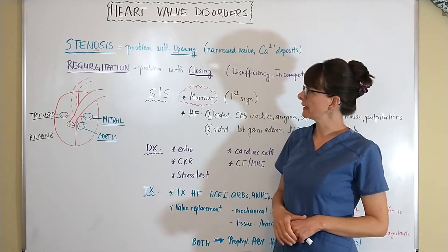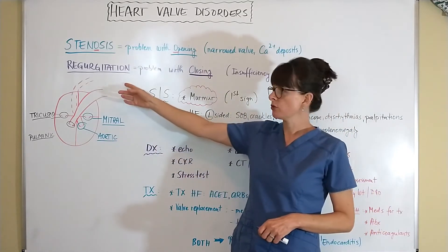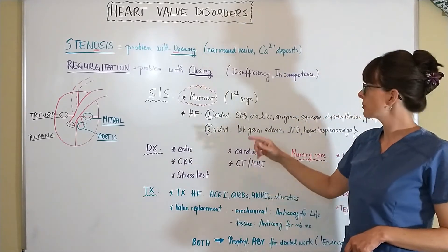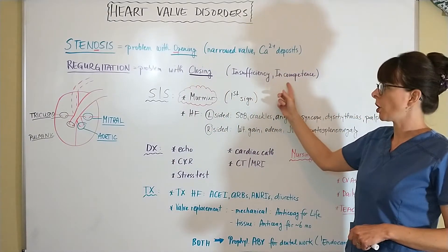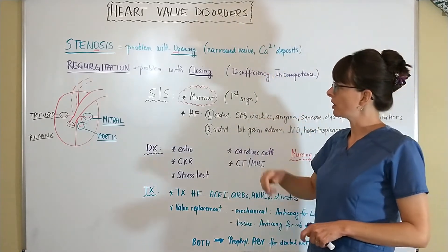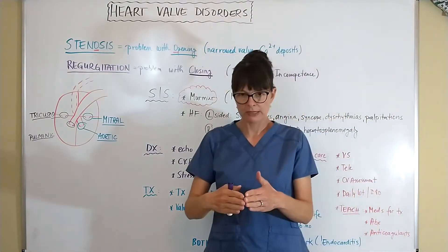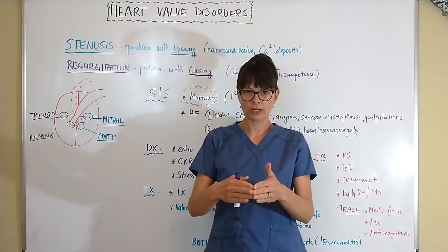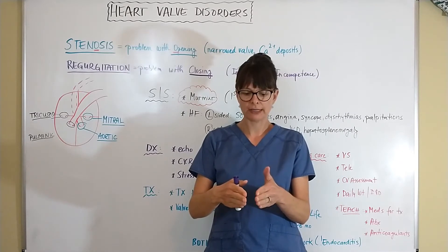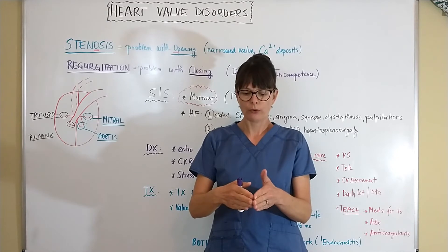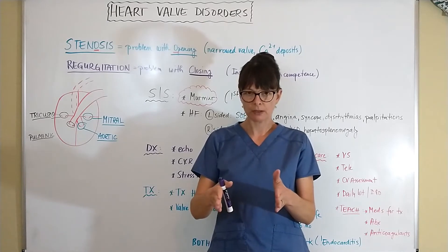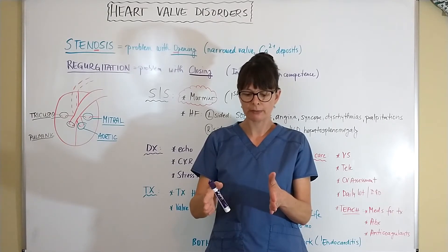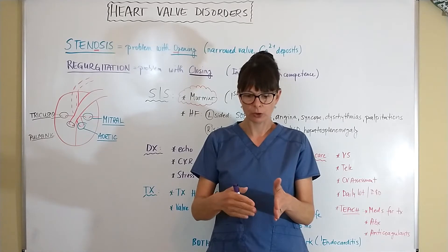The second problem that can happen with a heart valve is regurgitation, which is a problem with the closing of the valve, sometimes referred to as insufficiency or incompetence. When a valve is stenosed, the calcium deposits make the leaflets stiff and they can't fully open. In regurgitation, there's a problem with the closing — the valve might not close all the way, or the leaflets close unevenly, so there is a problem with complete closure.